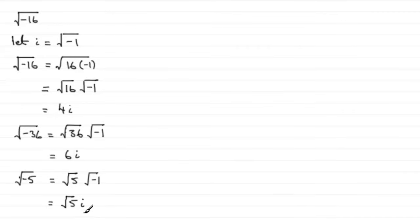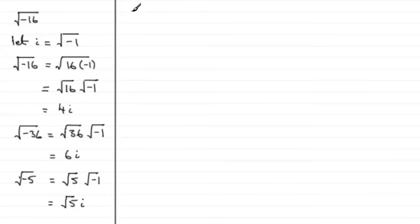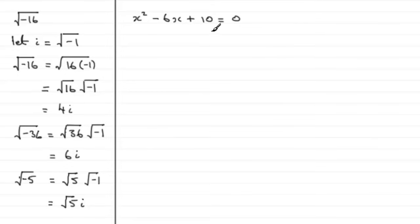We can use these ideas when it comes to solving quadratic equations. Suppose, for instance, we had the quadratic equation x squared minus 6x plus 10 equals 0. In the usual way, we'd most probably try and see if we could factorise it. And if it didn't factorise — and this one doesn't factorise — we go on to use the quadratic formula.